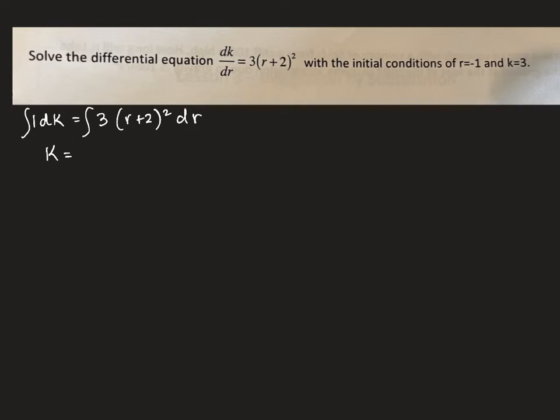And on the right hand side a little bit harder but not undoable. We can integrate (r+2)² without actually doing u substitution because the derivative of the inside is just a one.